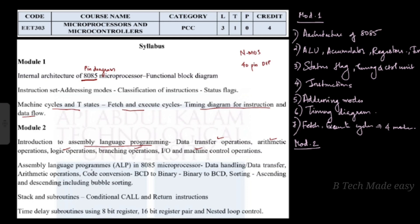We have assembly language programs for the 8085 microprocessor covering data handling and data transfer, arithmetic operations, code conversions including BCD to binary and binary to BCD, and sorting in ascending and descending order, including bubble sorting.